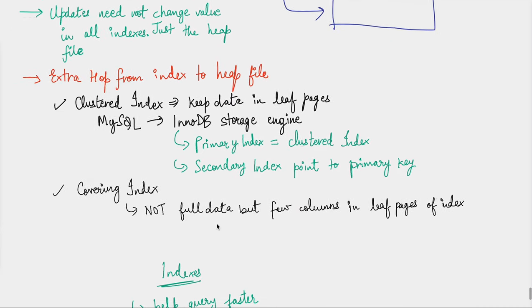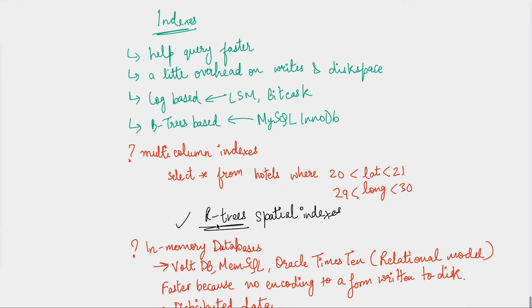To recap: indexes help queries run faster, with a small overhead on writes and disk space because indexes utilize more disk space and slow writes slightly due to extra operations needed to maintain query performance. We saw log-based approaches like Bitcask and LSM trees, and the page-oriented approach like B-trees — MySQL's InnoDB is an example of that.